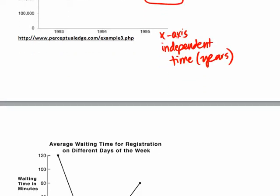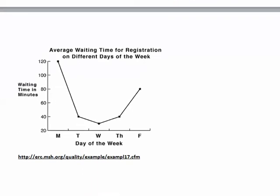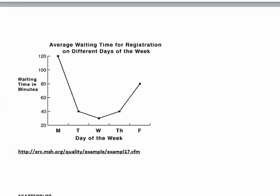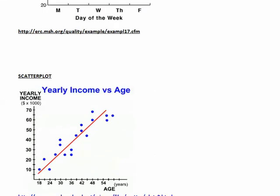Here's another line graph example showing the average waiting time for university registration on different days of the week. We have waiting time on one axis and the days Monday through Friday on the other. We can see a trend of decreasing values and then increasing values, and we can come up with reasons why Monday tends to have the longest waiting time, why Wednesday has the lowest, and why it increases again toward Friday.